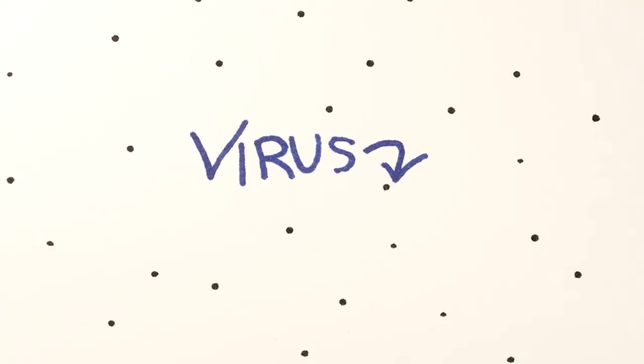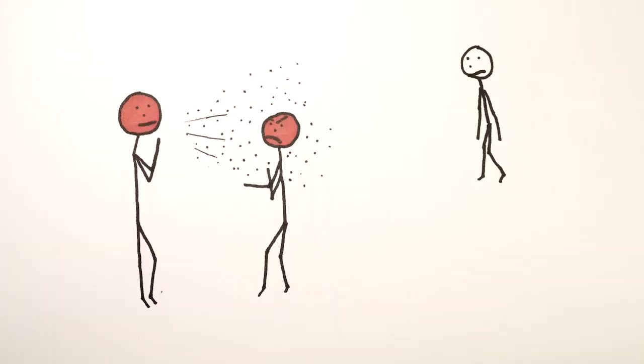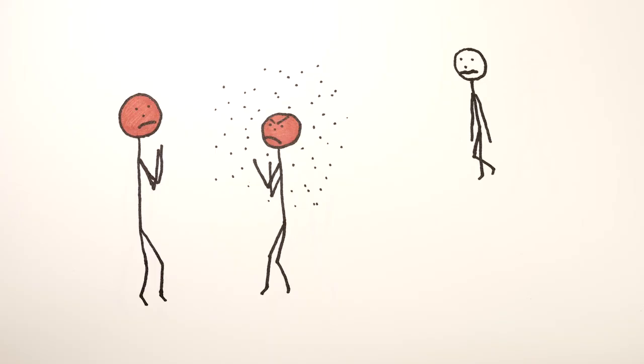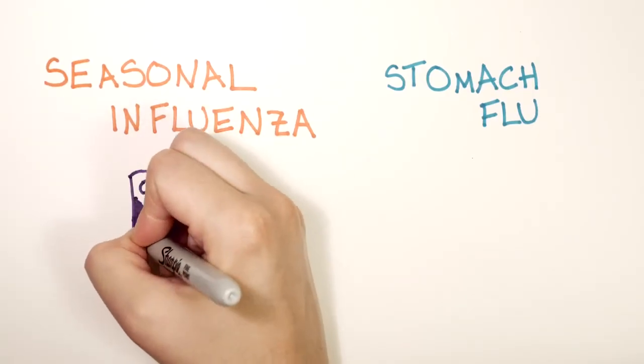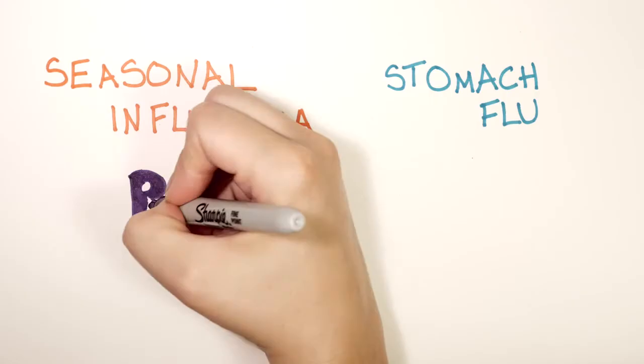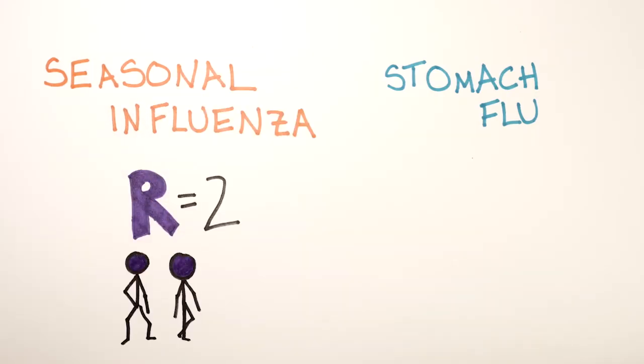The influenza virus can be transmitted through the air, but it doesn't survive for long outside the human body. So unless you're standing close to someone who sneezes on you, you might not get it. And as a result, the R-number for seasonal influenza in the United States is two.